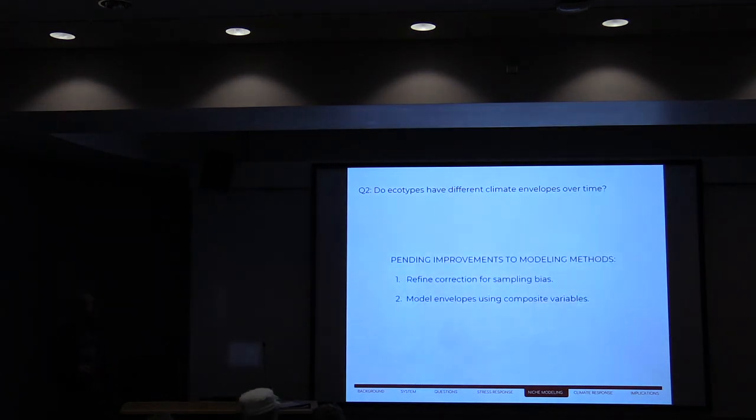And there's ongoing improvements to this project. One of the big issues is I'm currently working on refining correction for sampling bias. There's a few ways to do that, to make sure that what we're actually getting is plant occurrence density, not just where people sample it more. And then modeling the envelopes using composite variables.